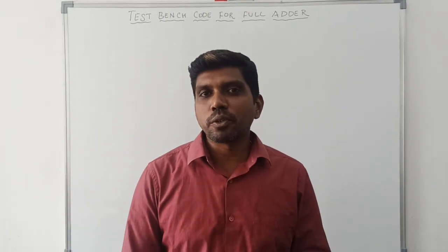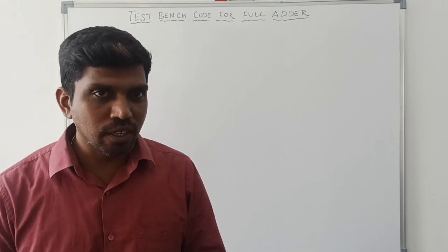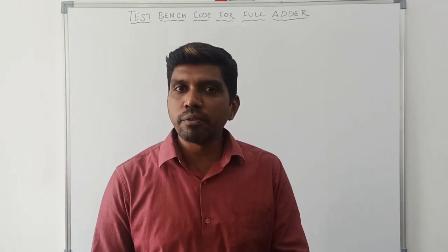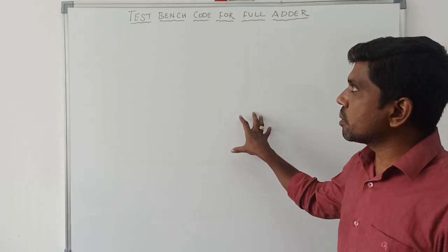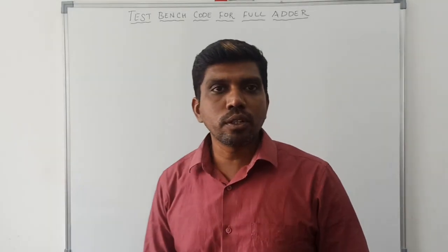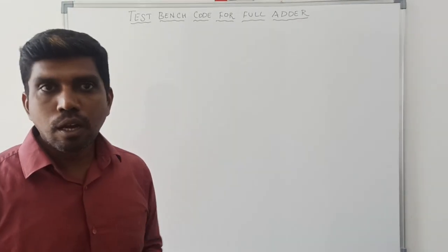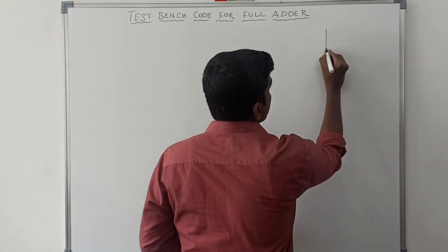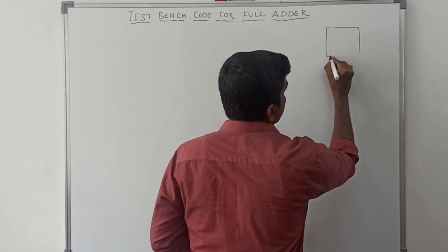Today's class I am going to teach about how to write the testbench Verilog HDL code for full adder. Previously we discussed the normal Verilog HDL code for full adder. This program comes in the behavioral model. First I draw the block diagram, then assign the input variables and output variables. It's a simple block diagram for the full adder circuit.